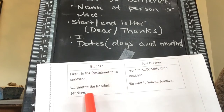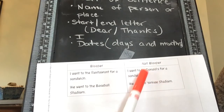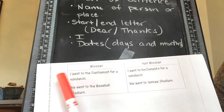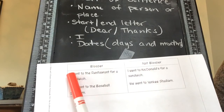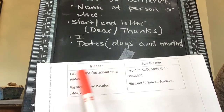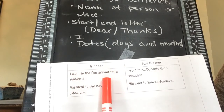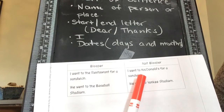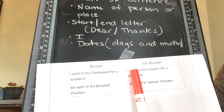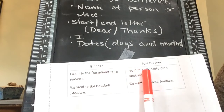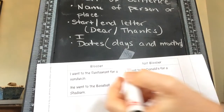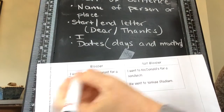These sentences have something wrong with them, and these sentences are similar but are not bloopers. So let's look at the first one. It says, 'I went to the Restaurant for a sandwich.' This sentence is similar to this one, but does not have a mistake. This one says, 'I went to McDonald's for a sandwich.' Pretty much the whole sentence is the same except 'the restaurant' versus 'McDonald's.'